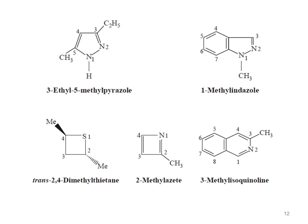Here we can see some examples of heterocyclic compounds with substituents at different positions. For example, 3-ethyl-5-methylpyrazole — this compound is a derivative of pyrazole, and pyrazole was named by the Hantzsch-Widman system. Because there is an ethyl group at position three and a methyl group at position five, the name is 3-ethyl-5-methylpyrazole.